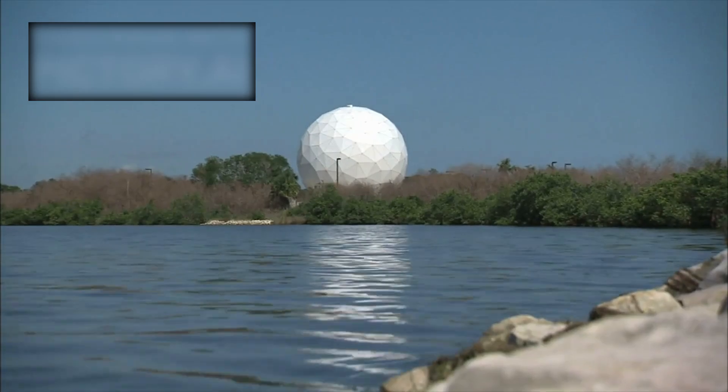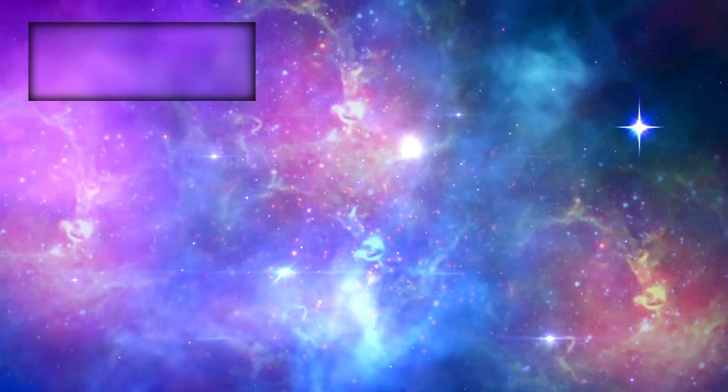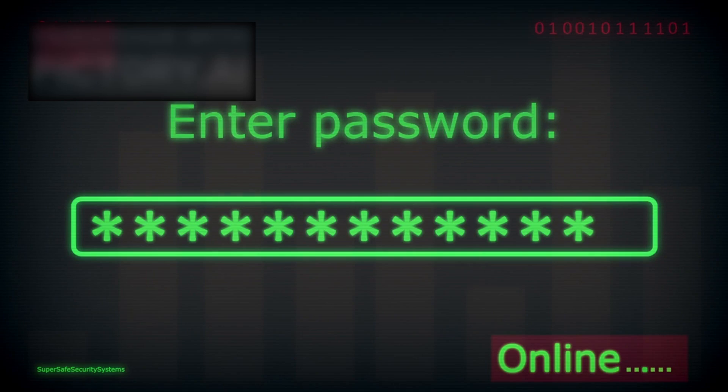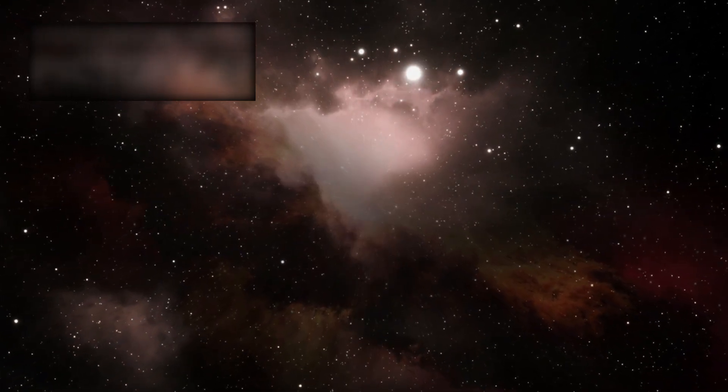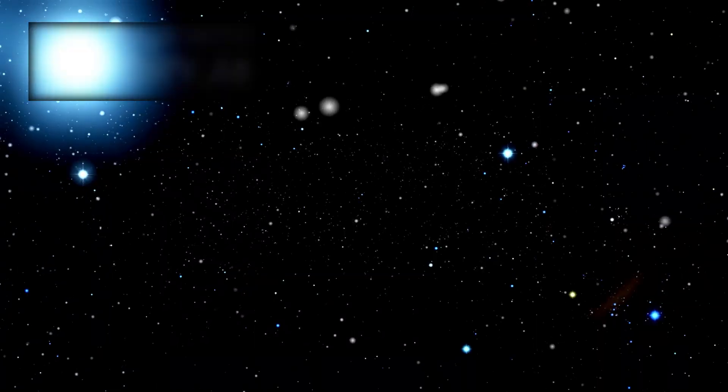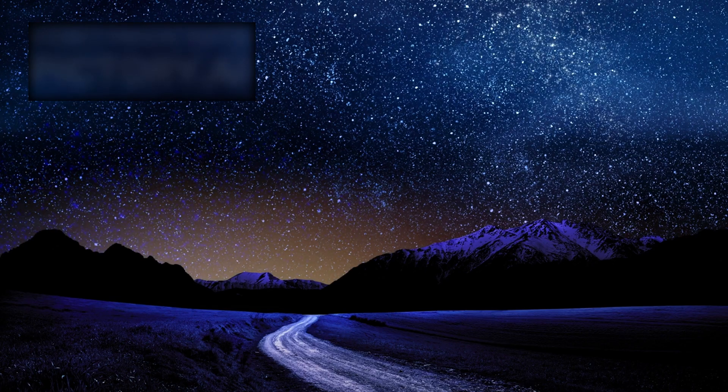Because what Webb was showing us wasn't just data—it was a new reality. A universe that grew up too fast, a cosmos that broke its own rules, a creation that refused to wait for permission. Astronomers found themselves staring not just into the past, but into a mystery so vast it made the beginning itself feel uncertain. What do you do when the universe stops following its own rules? When everything you thought you knew about creation suddenly feels incomplete?